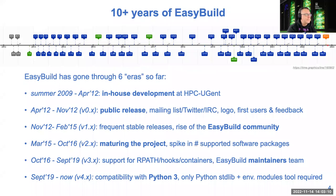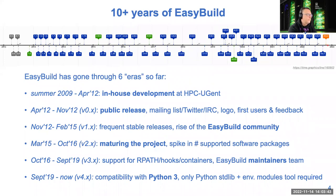It's actually over a decade of EasyBuild, because the first public release was 0.5 in April 2012, and before that there was a lot of in-house development. Over those 10 years we've gone through different eras: first the in-house development where nobody outside of our team and the Flemish Supercomputing Center knew about it, then the public release in 2012, getting first users and feedback, which kick-started the EasyBuild community.